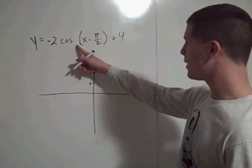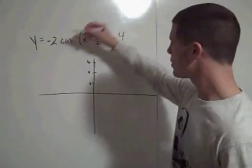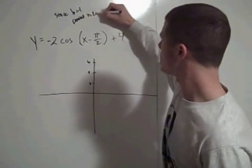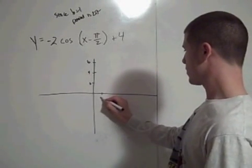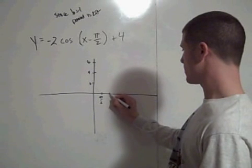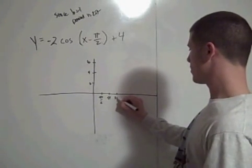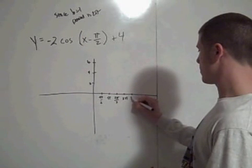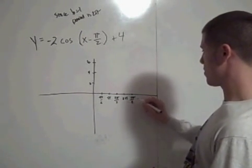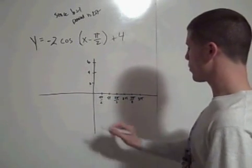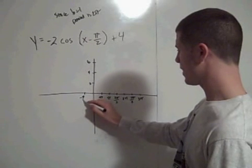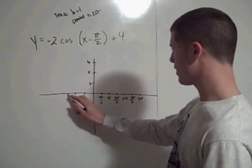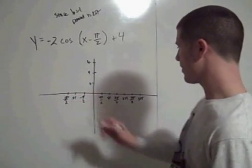Our period is 2 pi over 1. So, our b value is 1. So, since b equals 1, then our period is 2 pi. So, we have pi halves, pi, 3 pi halves, 2 pi, 5 pi halves, 3 pi, negative pi over 2, negative pi, negative 3 pi halves, that'll be enough.